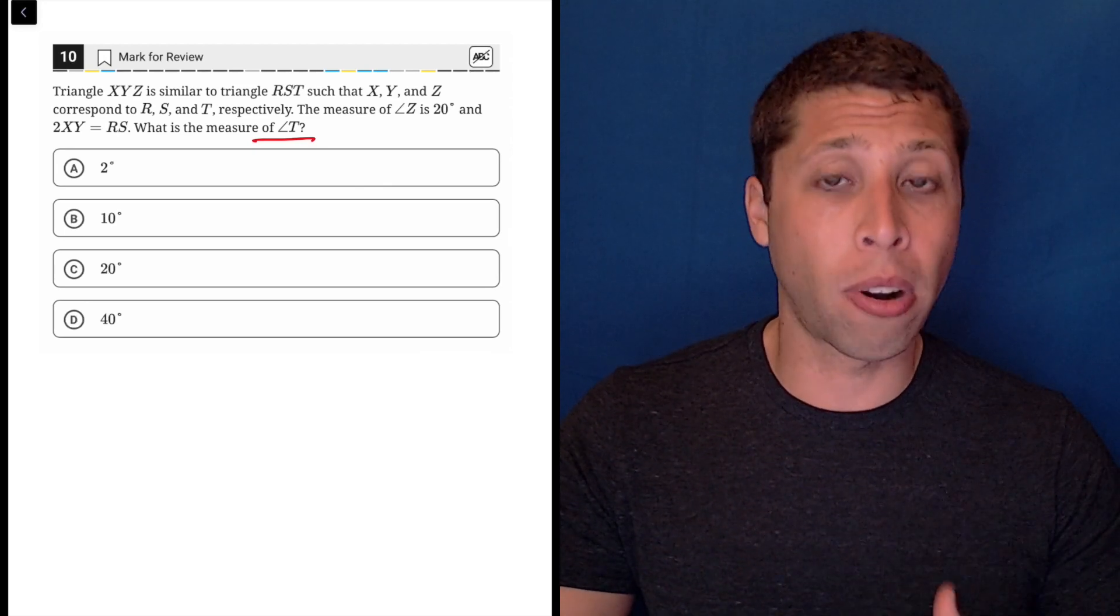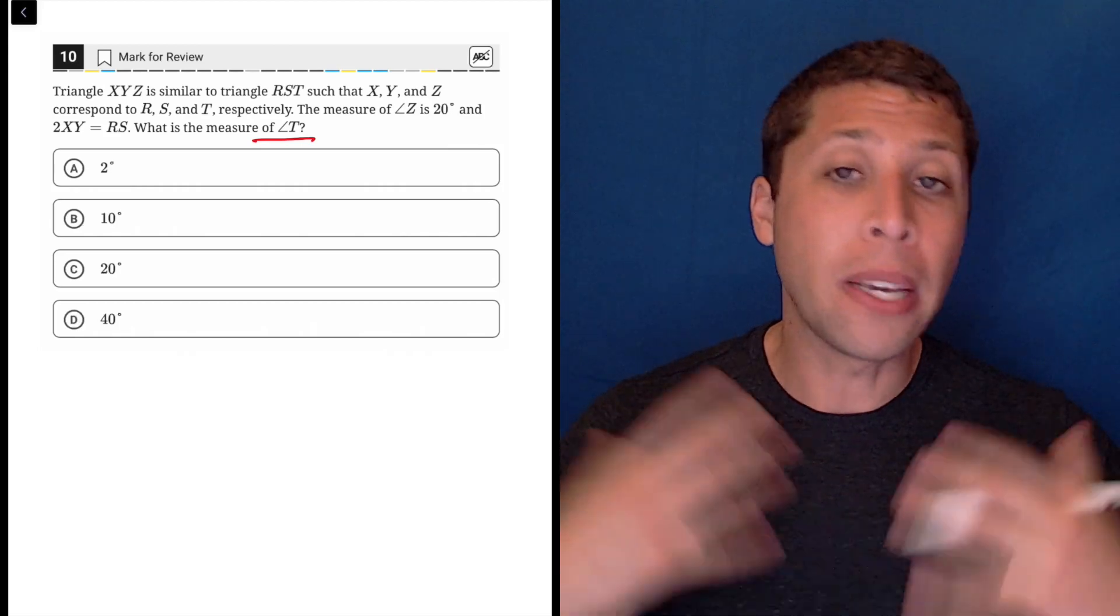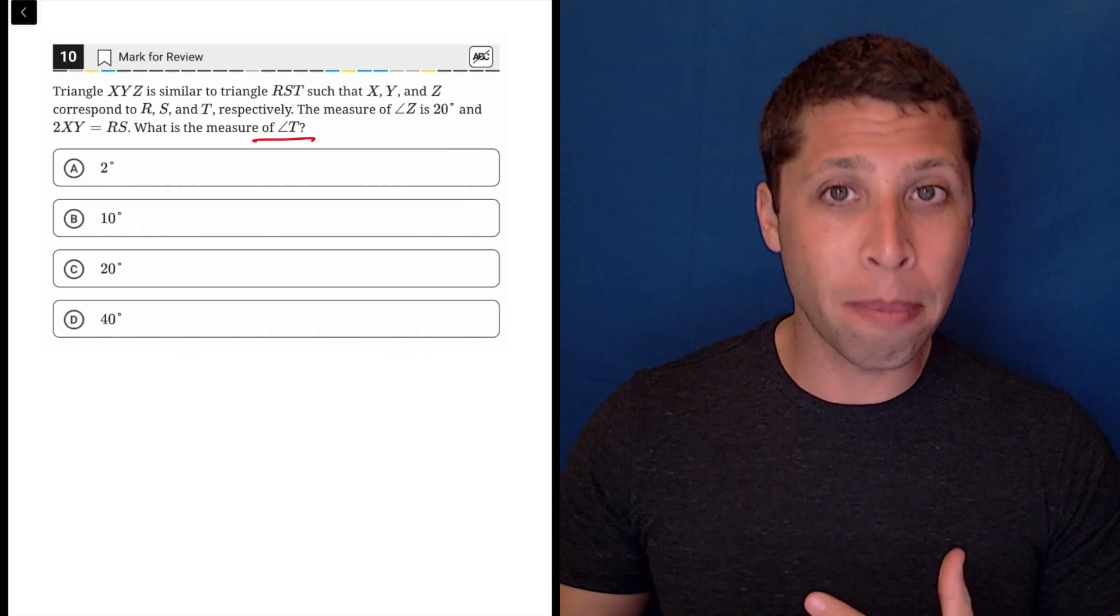So this is what makes triangles similar. They might be different sizes, but because the angle measures are the same, they're proportional.